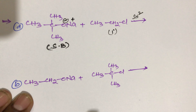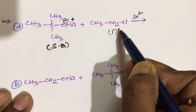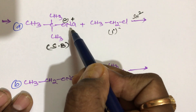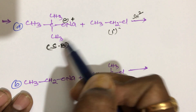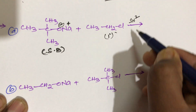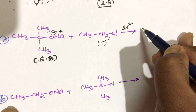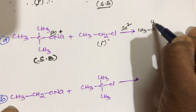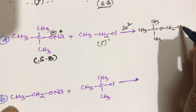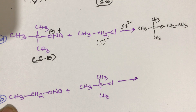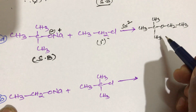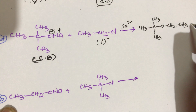It gives ethers. Primary alkyl halide in the presence of strong nucleophile follows SN2 mechanism. Tertiary butoxide is a strong nucleophile. Primary alkyl halide in the presence of strong base gives ether, follows SN2 mechanism. The product is CH3-C(CH3)2-O-CH2-CH3. This is ethyl tertiary butyl ether, plus NaCl. So compound A gives ethers.